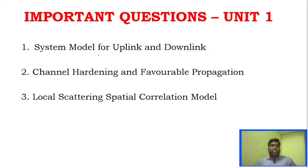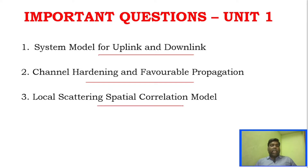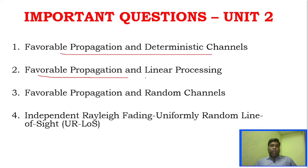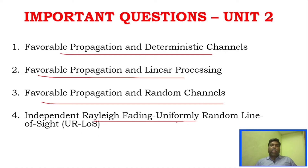For question-wise discussion: Unit 1 has three questions — system model for uplink and downlink, channel hardening and favorable propagation, and local scattering and spatial correlation model. For Unit 2, the important questions are: favorable propagation and deterministic channel, favorable propagation and linear processing, favorable propagation and random channels, line of sight, Rayleigh fading in line of sight, and UR-LOS.